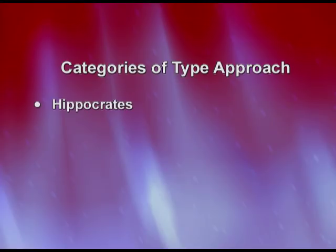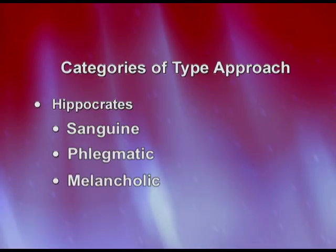The first category of type approach was given by Hippocrates, a Greek physician who gave the first approach to understanding personality type based on body fluid, or body humor. He talked about four kinds of humor and gave four names: sanguine, phlegmatic, melancholic, and choleric. You would have heard of the Hippocratic oath that doctors take — that is the same person Hippocrates, here talking about personality.